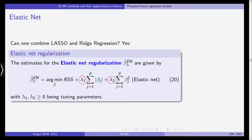We then minimize this penalized sum of squares, and once we've found the coefficients beta, we have our coefficient estimates for the elastic net regularization. The elastic net overcomes some of the shortcomings of both the lasso and the ridge regression. Later in the application, we'll see all three — lasso, ridge regression, and the elastic net.